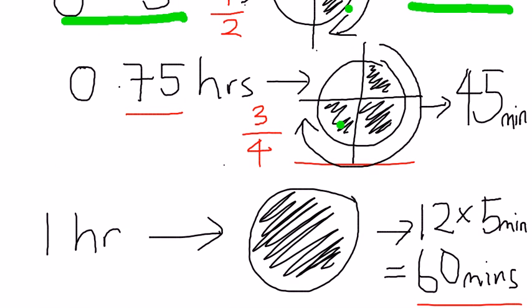Now, the third one, 0.75, in this case, 0.75 is three quarters. So, if you look at the circle that I have drawn over there, three quarters of a clock would be 45 minutes.